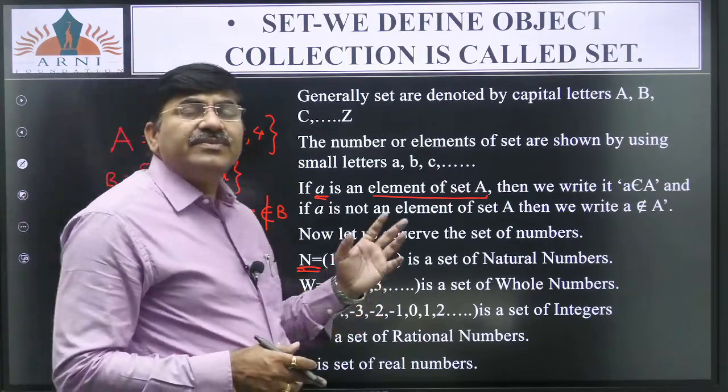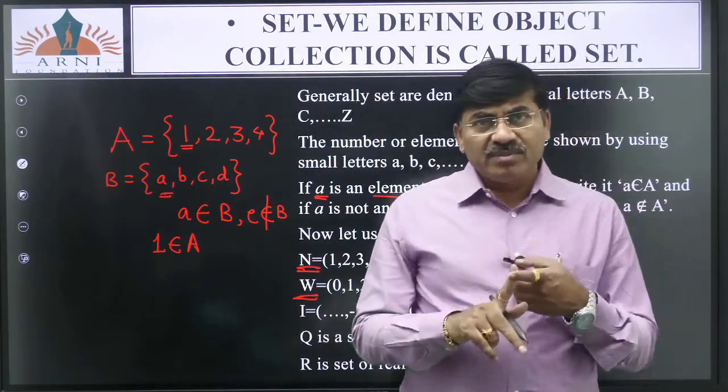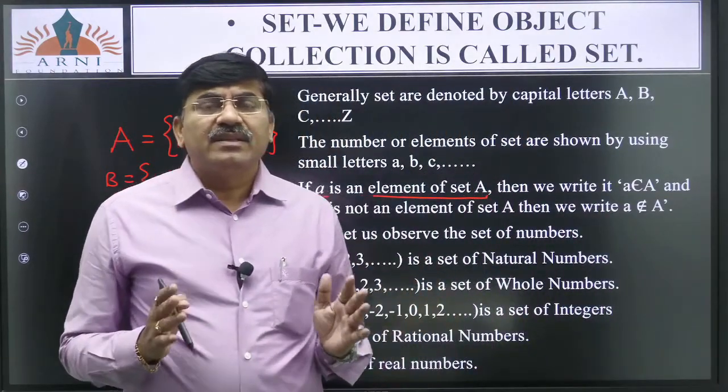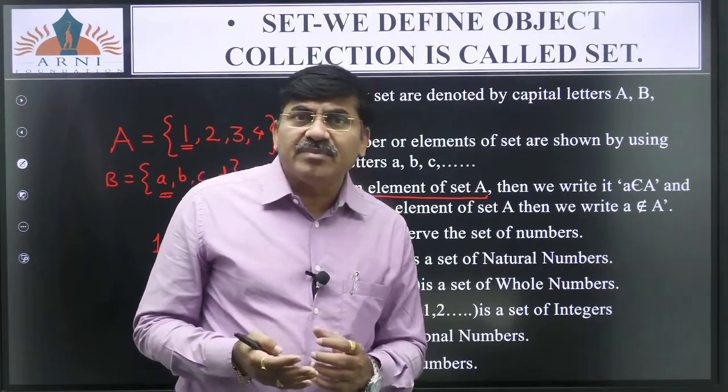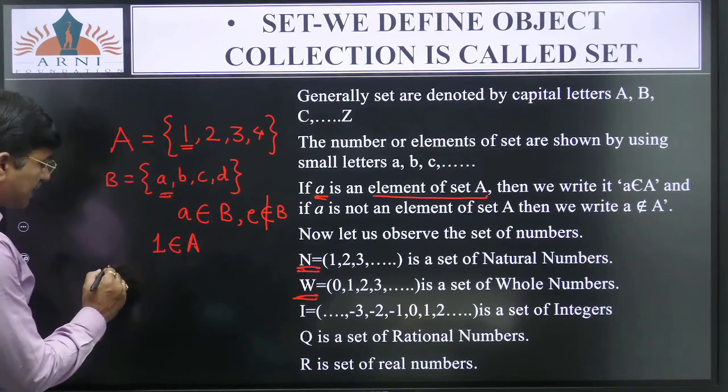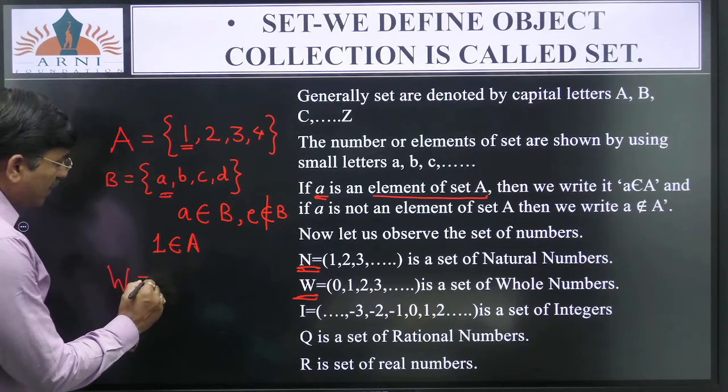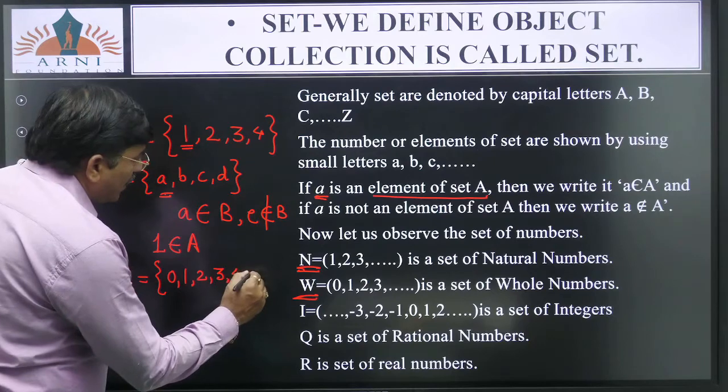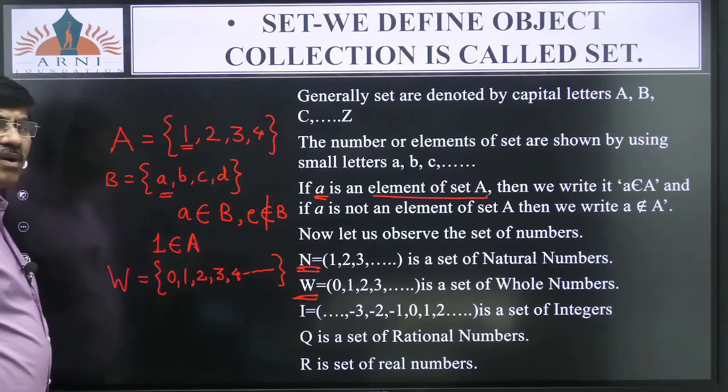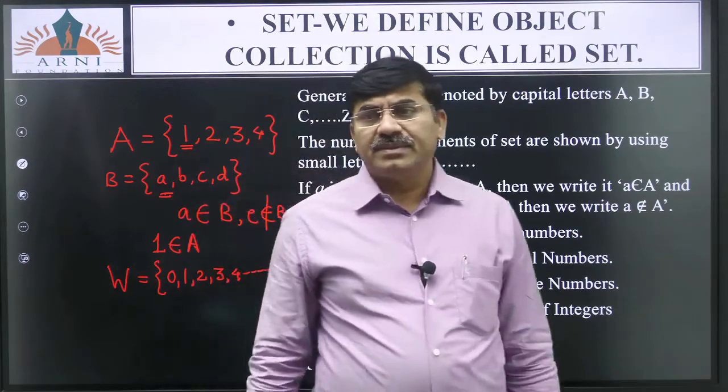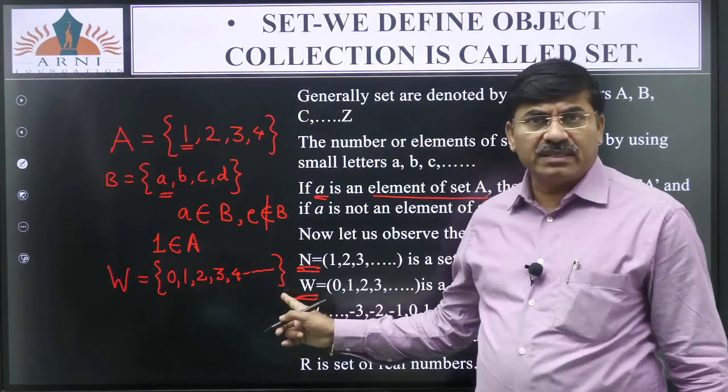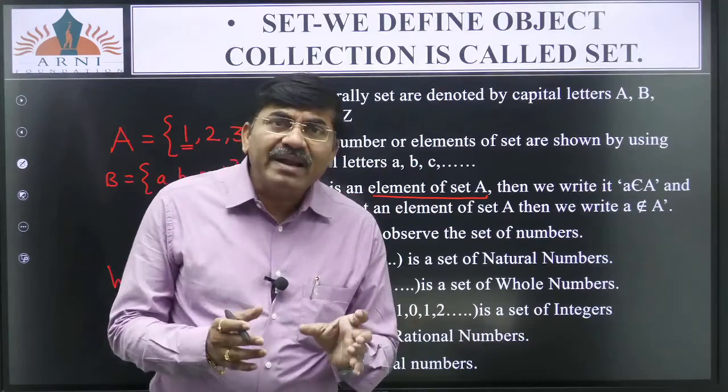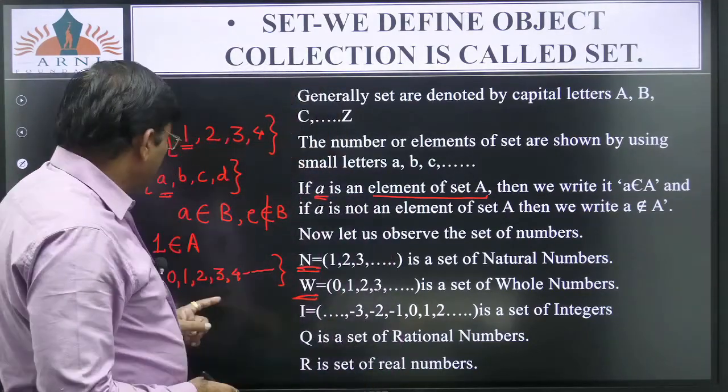So this is the different type of sets in mathematics we have natural numbers, whole numbers, integers. So whole numbers cha set, W is equal to curly bracket 0, 1, 2, 3, 4 and so on. These all numbers are called as whole numbers. That's why we will write it in the curly bracket.